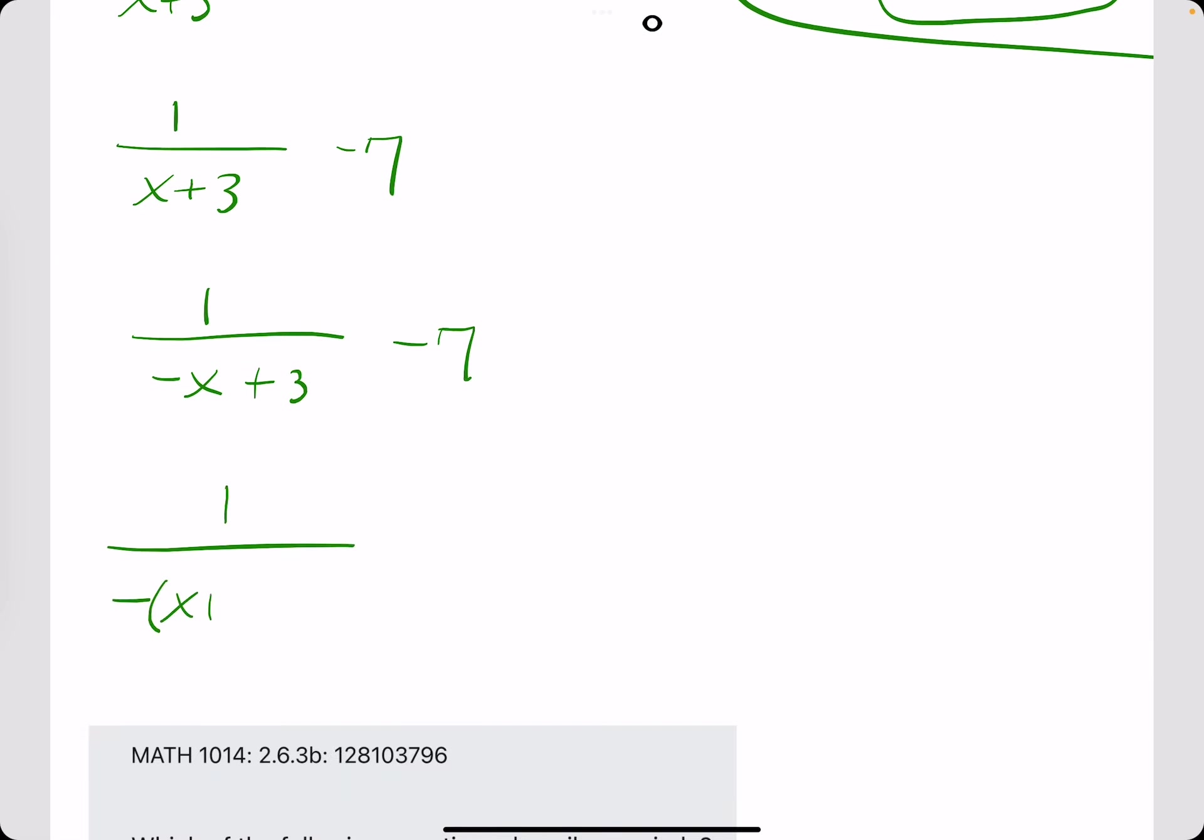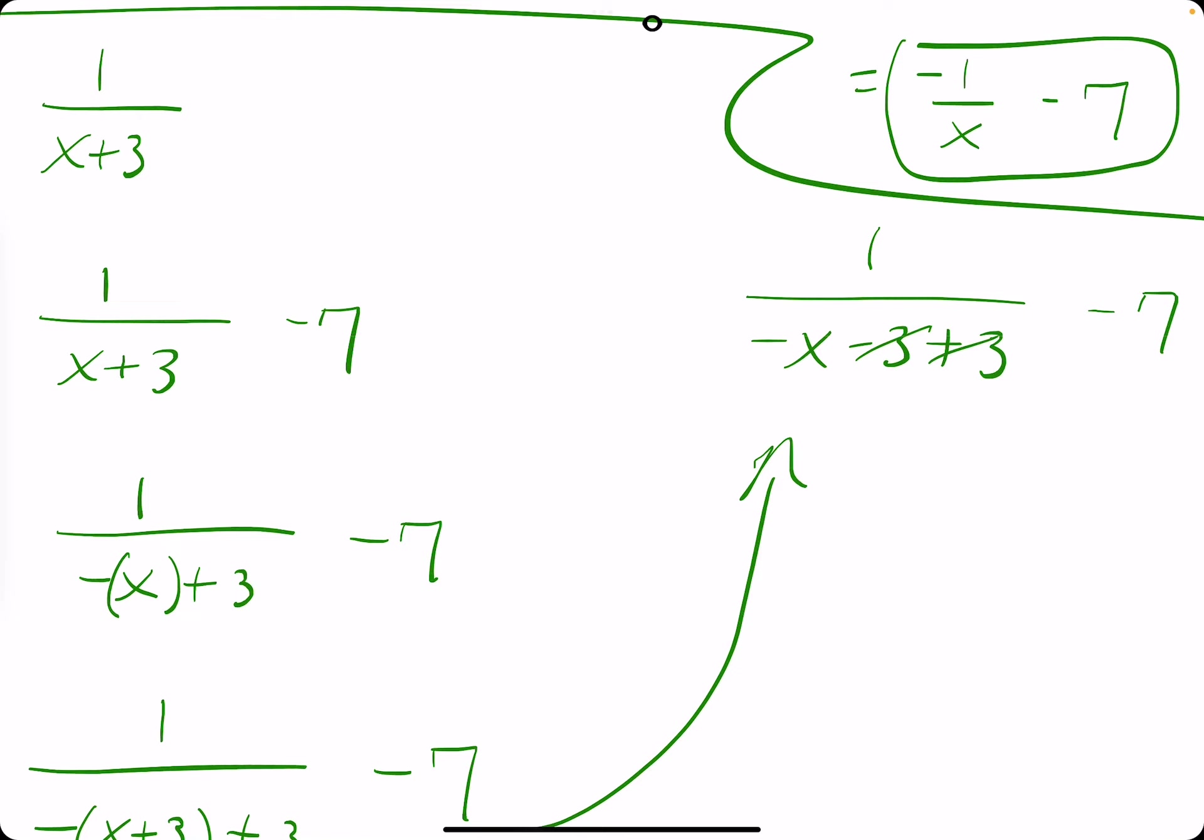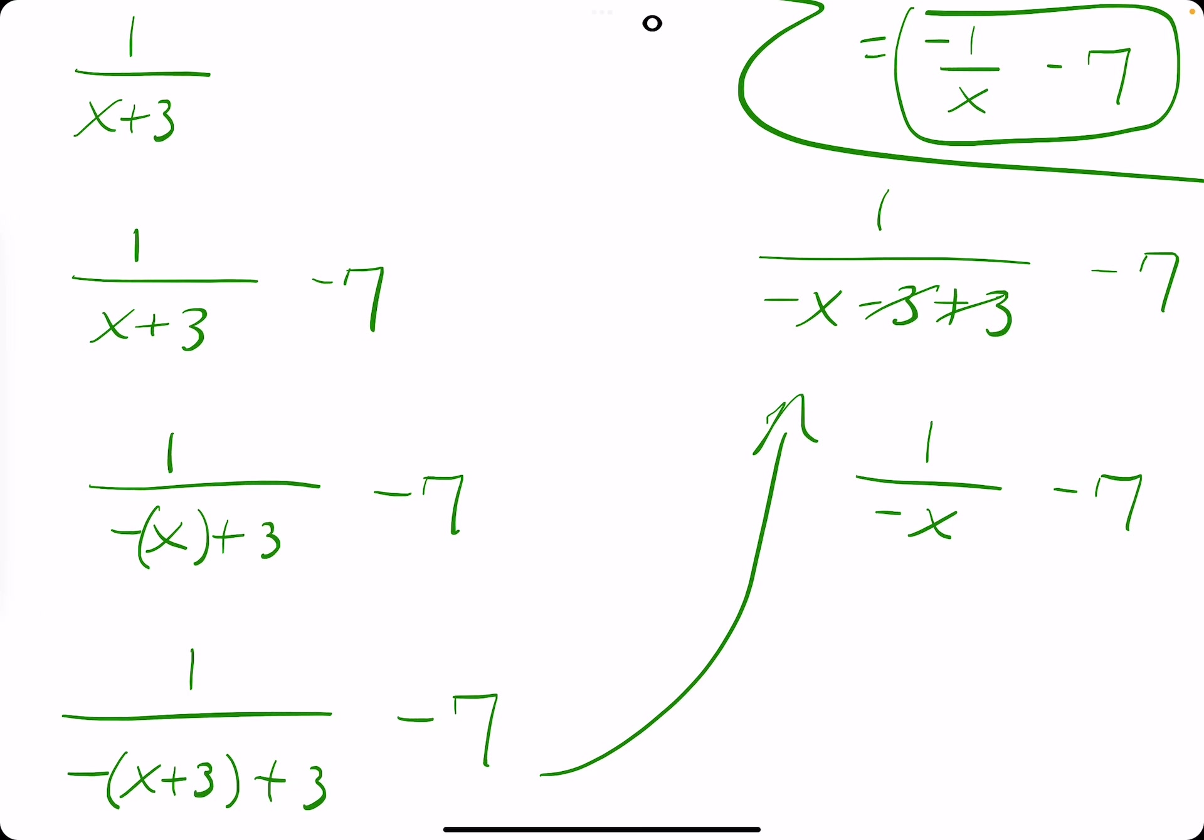Let's give it a go. Let's distribute the negative on the bottom first. We have negative x minus 3, and then we have the plus 3, and then we still have minus 7. So we have a minus 3 plus 3, those cancel. We're left with 1 over negative x minus 7. And we're pretty much done because we have negative 1 over x minus 7, just moving the place of the negative sign, right? So now this matches this.